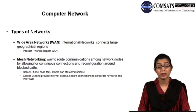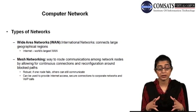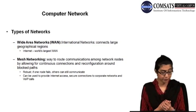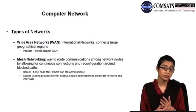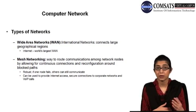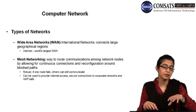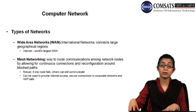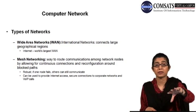Then we have wide area networks (WAN), which are international networks that connect large geographical regions — the internet is basically the world's largest WAN. Another type of network is mesh networking, which is basically a way to route communications among network nodes by allowing for continuous connections and reconfiguration around blocked paths. Mesh networking is somewhat like peer-to-peer networking, in which every node or every computer is connected with each other — so that if one node fails, another node can have a path of communication to the other node with the help of other nodes.